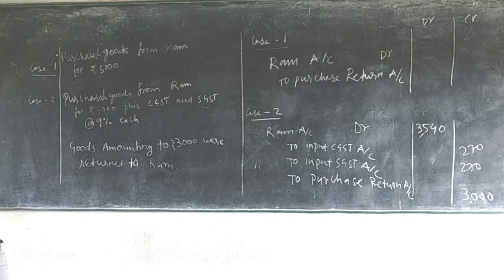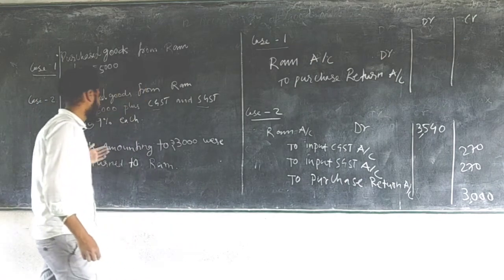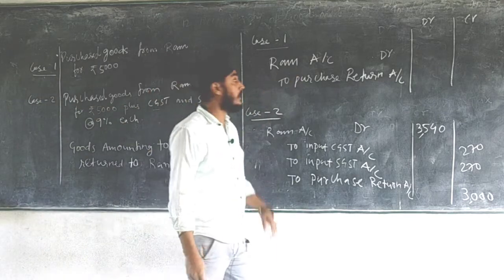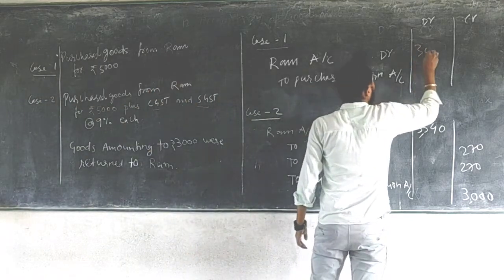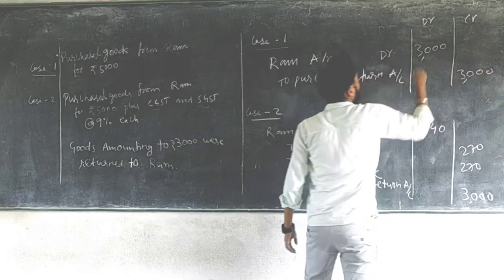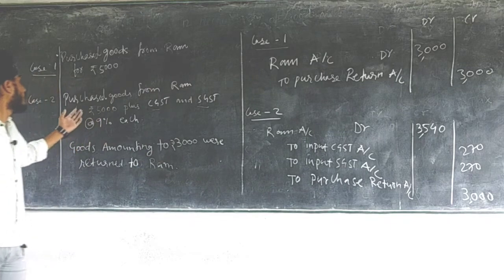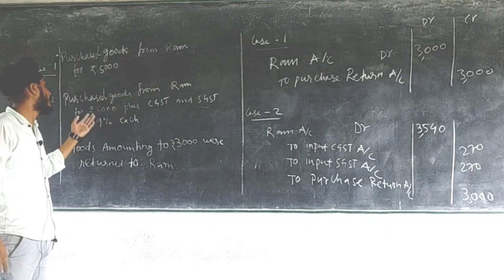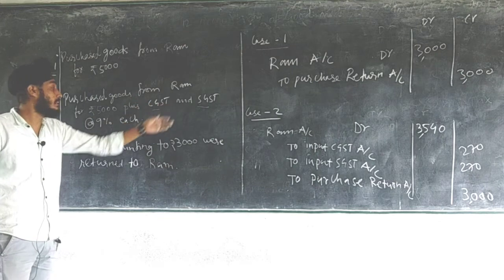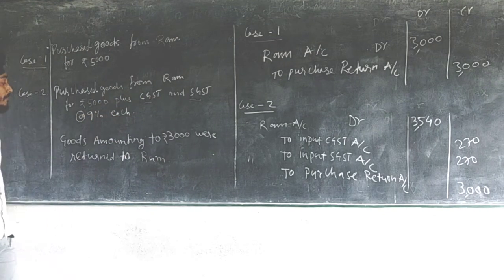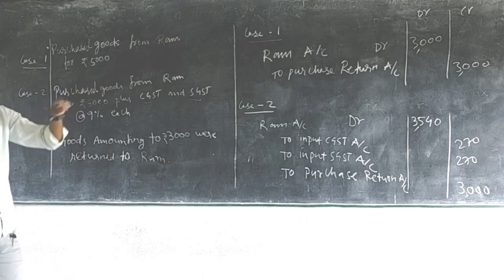Now let us see the journal entry for purchase return. Suppose goods amounting to rupees 3000 were returned to Ram. The normal entry is: Ram Account debit, to Purchase Return — 3000 each side. When GST is involved — suppose we had purchased goods from Ram for rupees 5000 plus CGST and SGST at 9% each — and we are now returning those goods, we must return inclusive of GST.